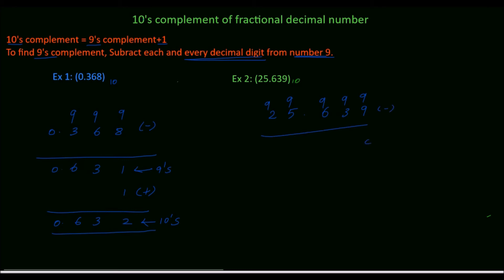9 minus 9, 0. 9 minus 3, 6. 9 minus 6, 3, point. 9 minus 5, 4. 9 minus 2, 7. This is 9's complement.